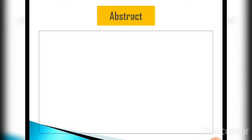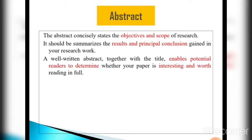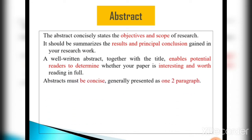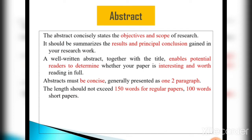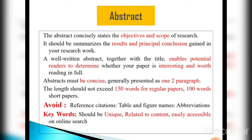Next is the abstract. The abstract concisely states the objectives and scope of the research. It should summarize the results and principal conclusions gained in your research work. A well-written abstract, together with the title, enables potential readers to determine whether your paper is interesting and worth reading in full. Abstracts must be concise, generally presented as one or two paragraphs. The length should not exceed 150 words for regular papers and 100 words for short papers. While writing the abstract, avoid reference citations, table and figure names, and abbreviations.